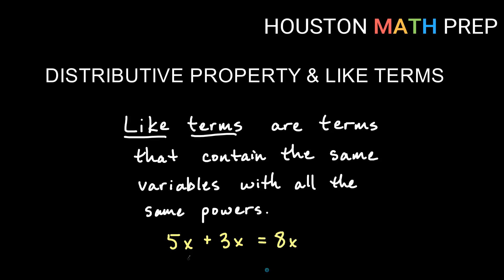So in the same way, 5x plus 3x — because these have the same variable and the power is 1 on each — I can combine those as like terms. If I had something like 5x² plus 3x, these are different types of objects; an x² term and an x term are not the same thing. Just like we wouldn't add 5 cats and 3 dogs and say we get 8 cat-dogs, we simply cannot combine those unlike terms.